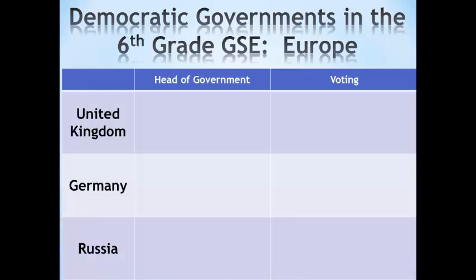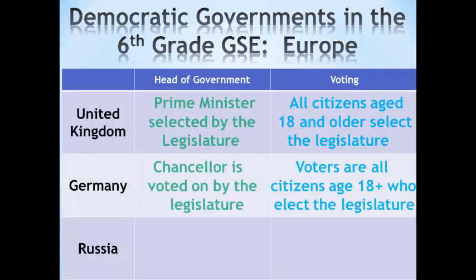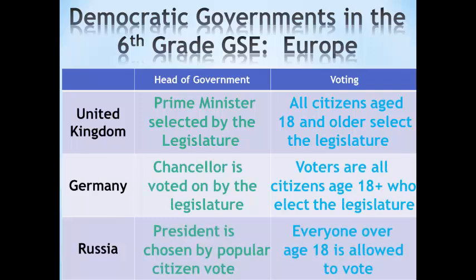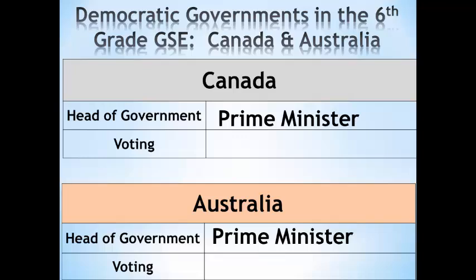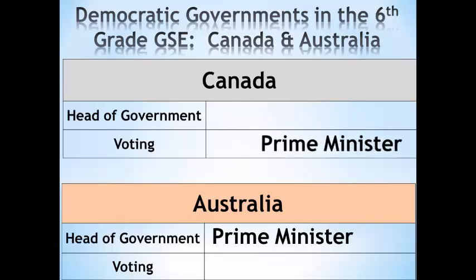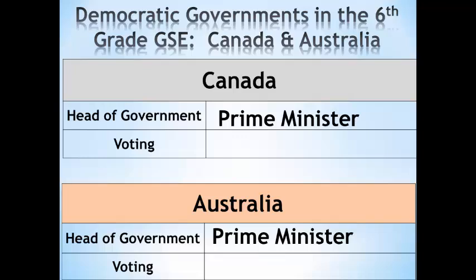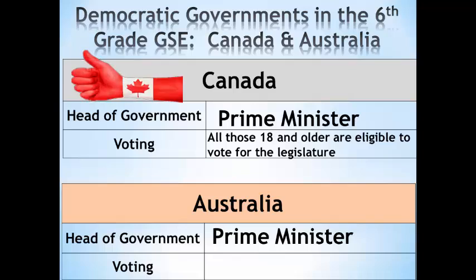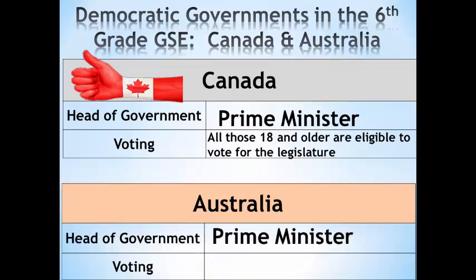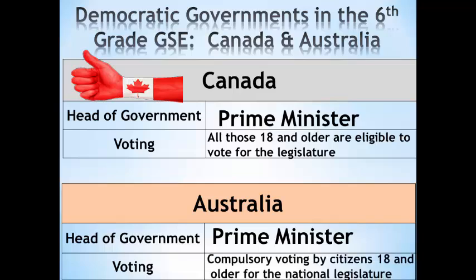The democratic governments in Europe include the United Kingdom, Germany, and Russia, where citizens directly elect their national leaders. Canada and Australia are both independent nations that claim the monarch of Great Britain as their ceremonial chief of state, represented by a governor general in both countries, but both operate similar democratic systems. In Canada, members of the legislative branch are elected directly by citizens, the legislative branch selects the prime minister as head of government, and voting is available to all citizens age 18 and over. In Australia, the same structure applies, but voting is required by all citizens age 18 and over.